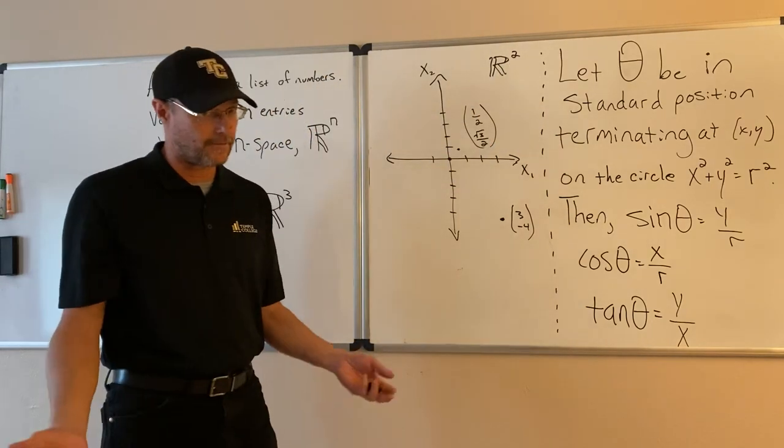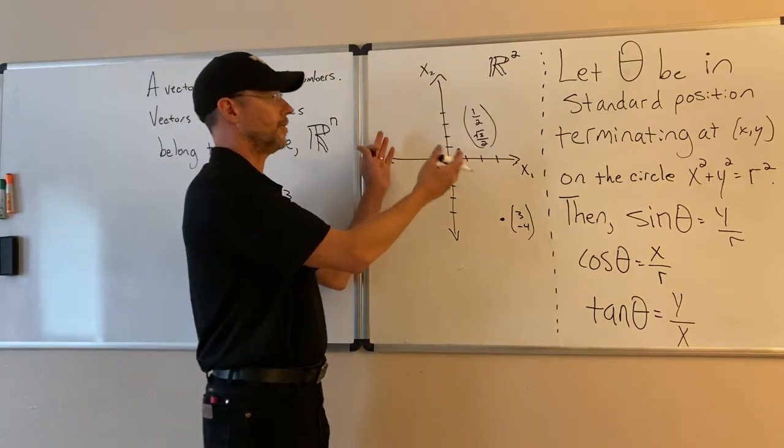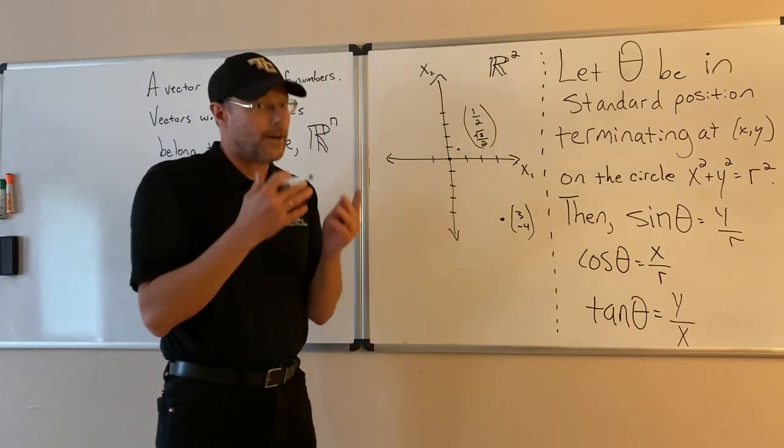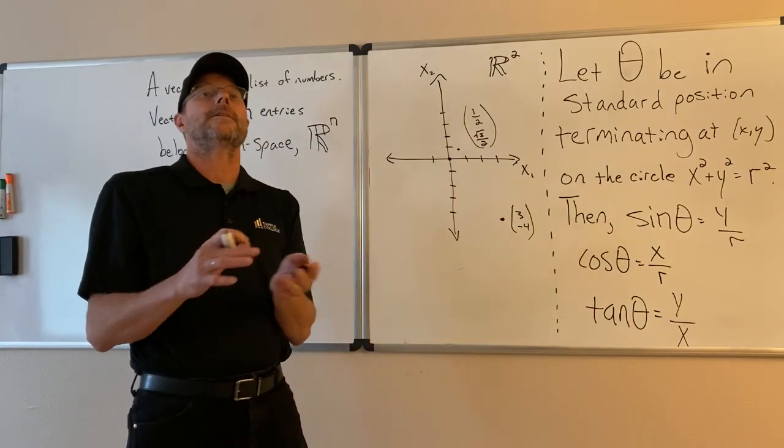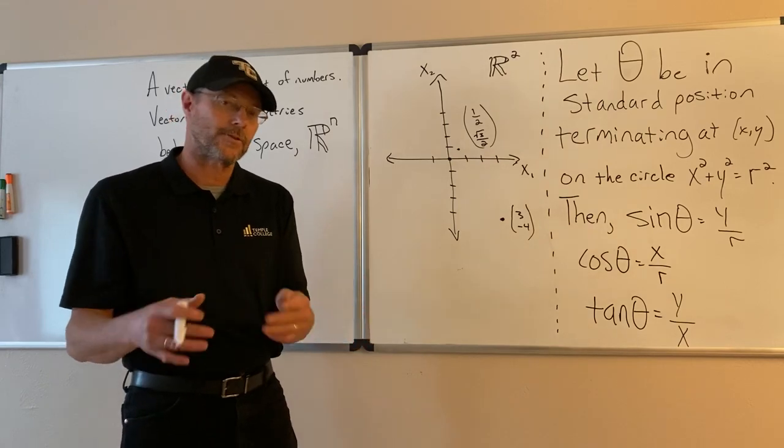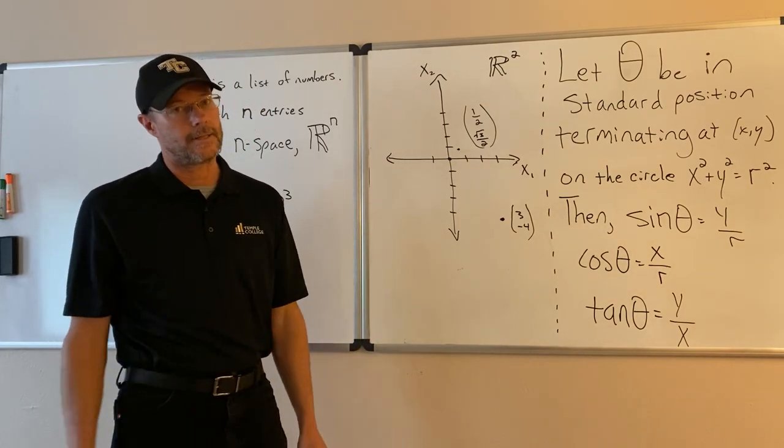And you can represent vectors quite obviously in two-dimensional space with a point. In other words, a vector in two-space is an ordered pair. Those things you're introduced to in seventh grade.